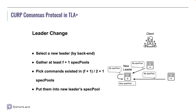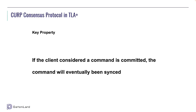Now we have to prove this model is correct. We must ensure a key property: if the client considered a command committed, the command will eventually be synced. If it is not synced yet, it will be synced eventually — we don't know the exact time, but it will happen. The TLA+ specification of the CURP consensus protocol is now complete, and you can find the whole document in Xline's GitHub repository. We can use the TLC model checker to check that every state meets the requirement of this property. This is quite a simple algorithm, but it can hugely improve latency in geo-distributed systems.